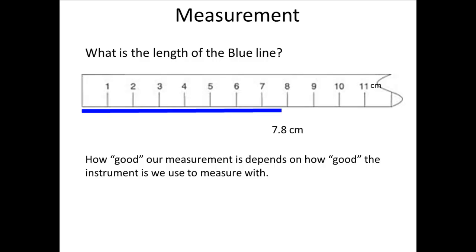Notice that with the first instrument, we got one digit for the length, and that digit was estimated or uncertain. Here, with a better instrument, we get two digits, and we are sure of the value of the first, but uncertain about the value of the second.